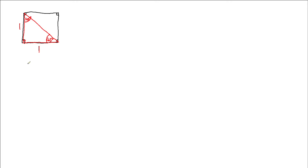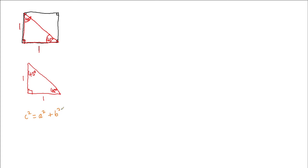If I draw that one triangle out separately, I have a right angle triangle with the other two angles being 45 degrees, because it's an isosceles right angle triangle with short side lengths of one. All I need to do is figure out the length of my hypotenuse. Using Pythagoras' theorem, c squared equals one squared plus one squared, which means c squared equals two.